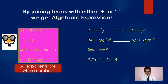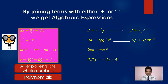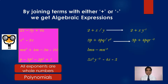In some algebraic expressions the exponents of the variables are whole numbers — either 0, 1, 2, 3, or 4. These algebraic expressions in which the exponents of the variables are whole numbers are called polynomials.